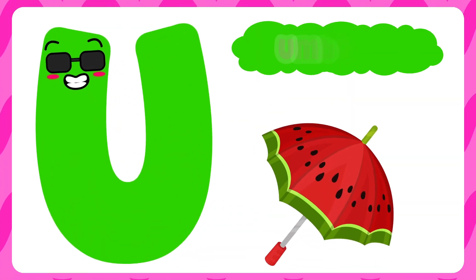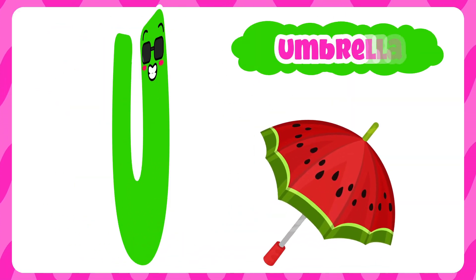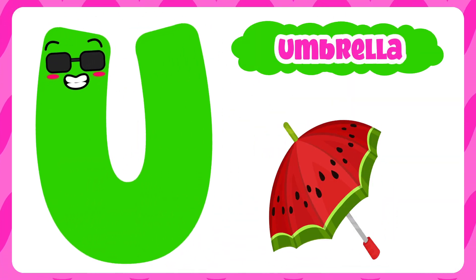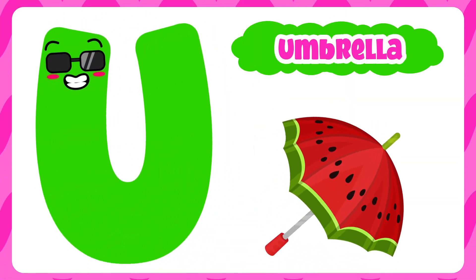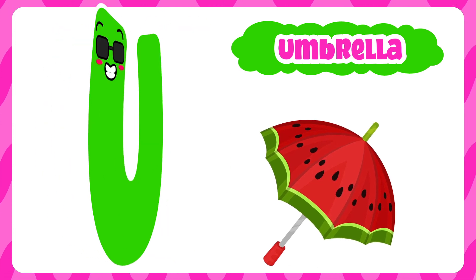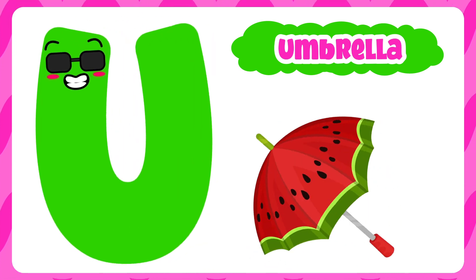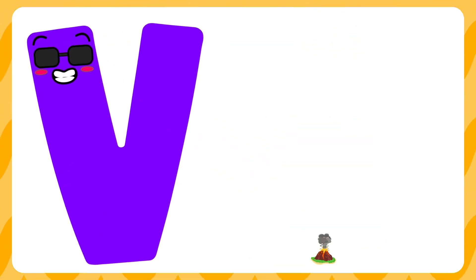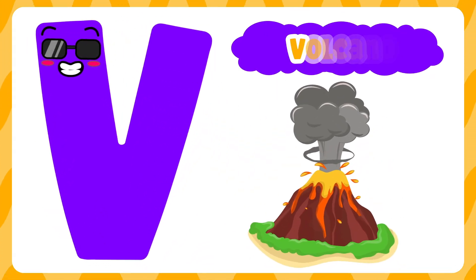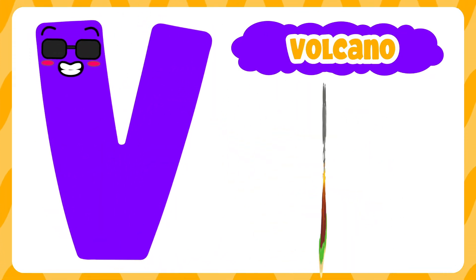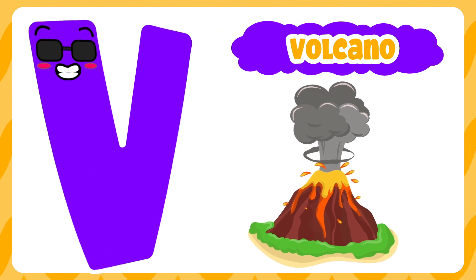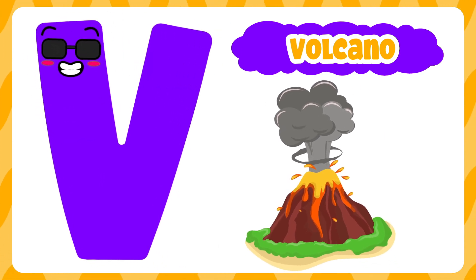U is for umbrella. A, a, umbrella. U is for umbrella. V is for volcano. V, v, volcano. V is for volcano.